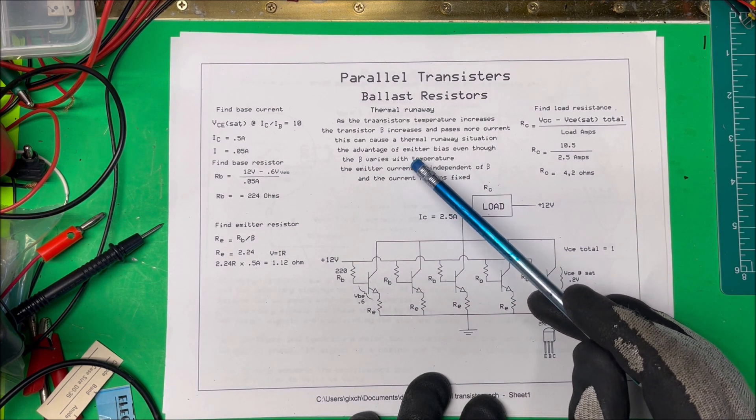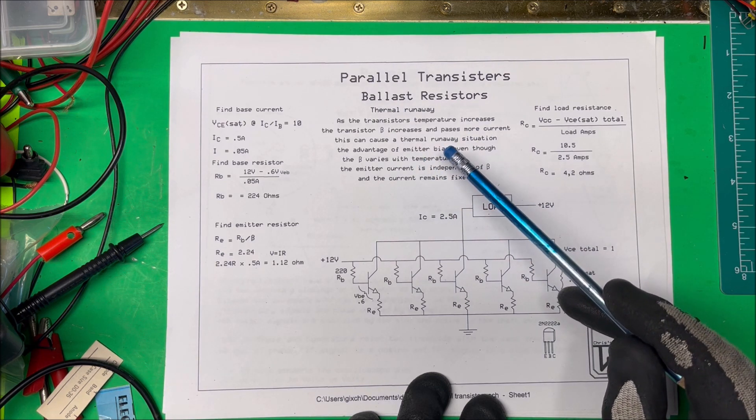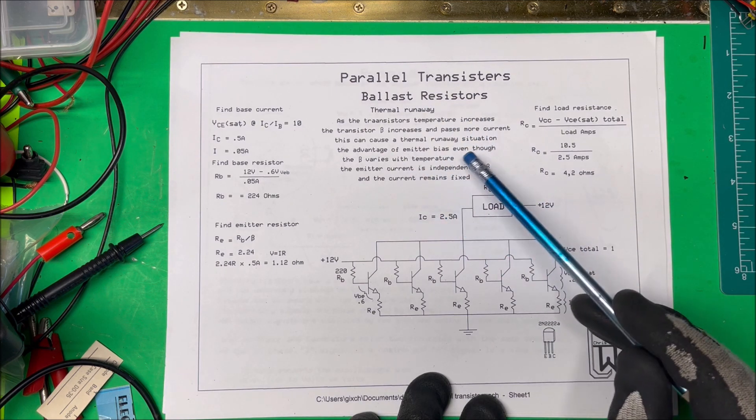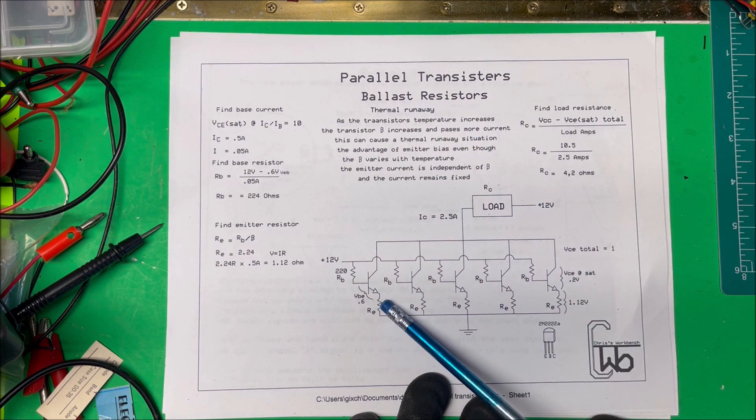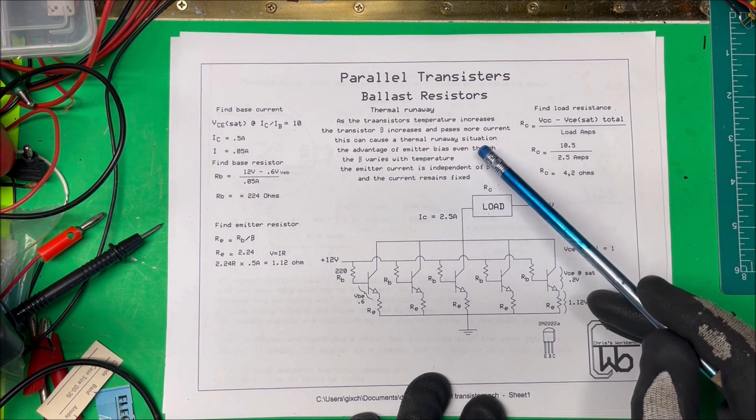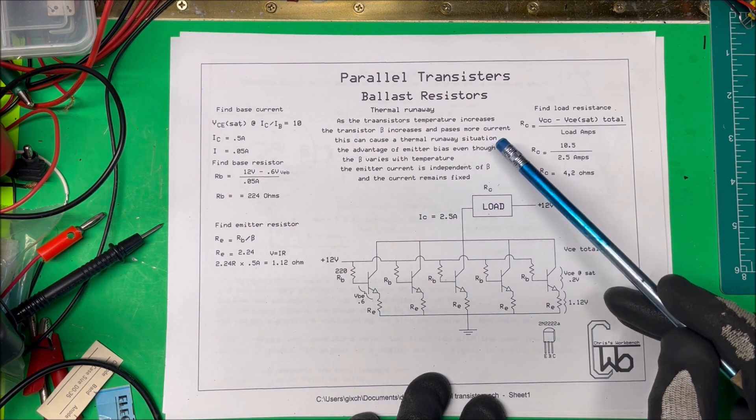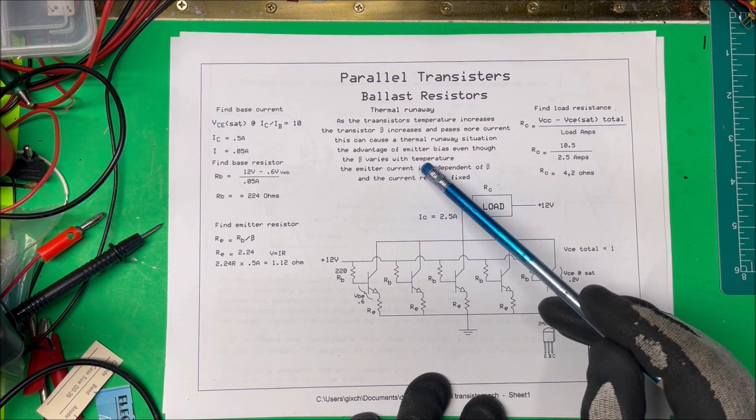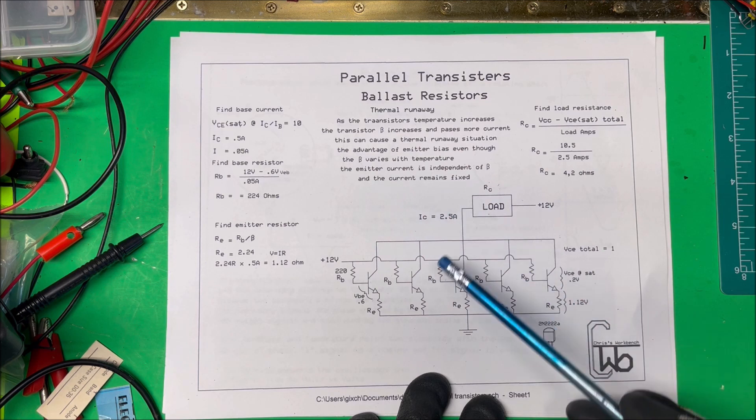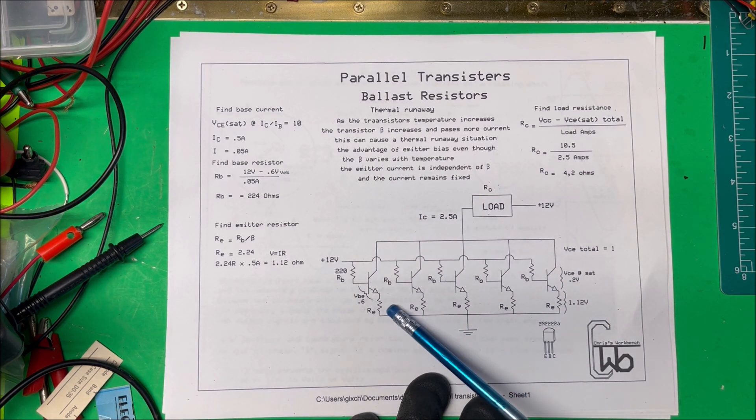Now in order to mitigate that, we use a ballast resistor, an emitter bias. So if we put these emitter bias transistors in here, the advantage of the emitter bias is even though the beta varies with the temperature, the emitter current is independent of beta and the current remains fixed. So hopefully these will keep it from having any thermal runaway.